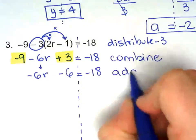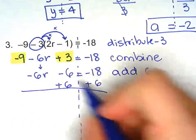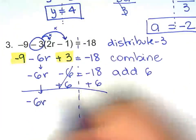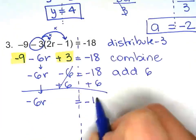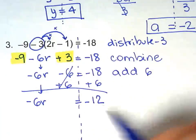Now we add 6. Bring everything else down. Negative 18 plus 6 is negative 12.